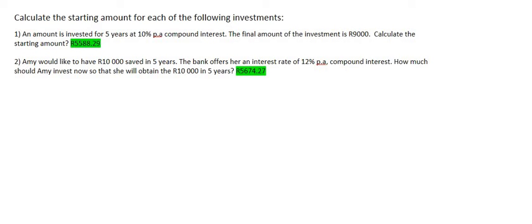Alright, let's start with number 1. An amount is invested for 5 years at 10% per annum compound interest. The final amount is 9,000. Calculate the starting amount.